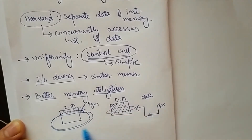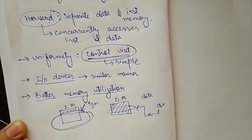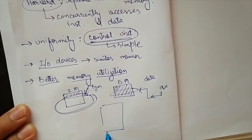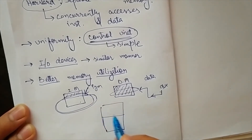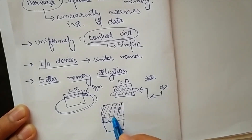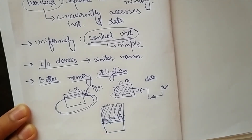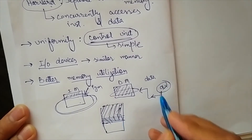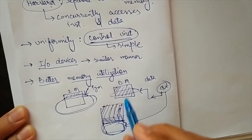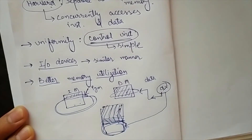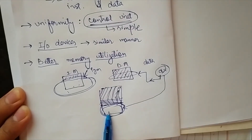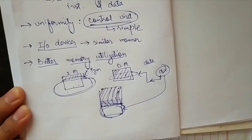That available space in instruction memory cannot be used because it is categorically reserved for instructions. In von Neumann architecture, these two memories are together. The initial data occupies one space and the program occupies another, so new data can be easily inserted in the remaining free space. This cannot be done in Harvard architecture, so memory utilization is not better there, whereas in von Neumann architecture memory utilization is better.